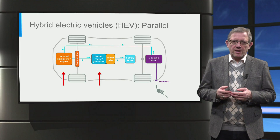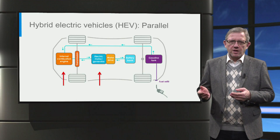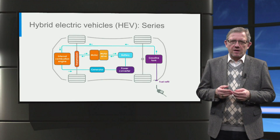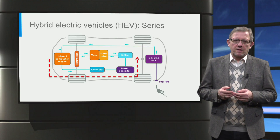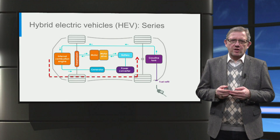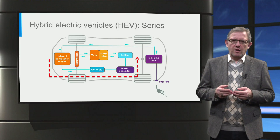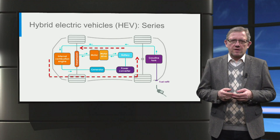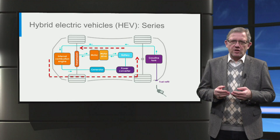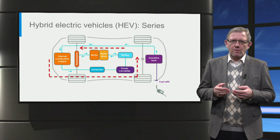What we have just seen is a parallel hybrid architecture where both the engine and the motor can power the wheels at the same time. A series hybrid electric vehicle, on the other hand, works differently. The internal combustion engine is used to drive a generator and provide electrical power for the traction motors and to charge the battery. This is a common propulsion method which has been used in locomotives for many years. The traction motor is the only power supply unit with a direct connection to the wheels. The advantage is that the internal combustion engine can be operated at its most efficient point to generate the necessary current for driving the traction motor or charging the battery.